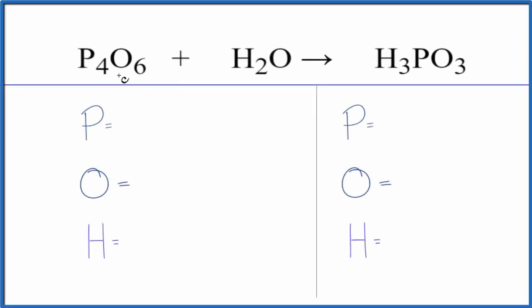To balance this equation, P₄O₆ plus H₂O, we first count the atoms up on each side of the equation.